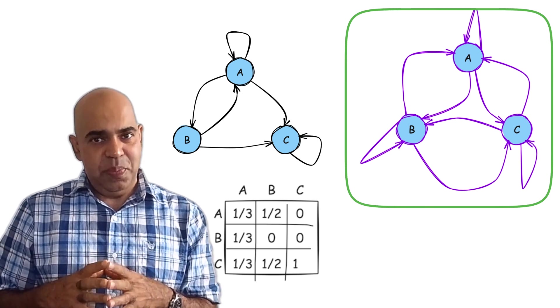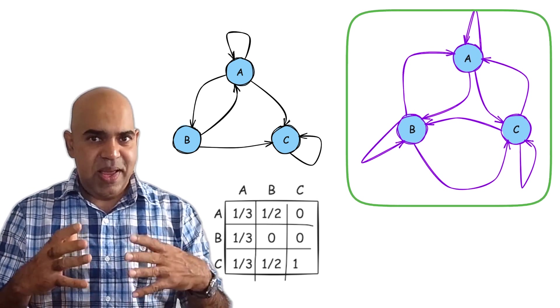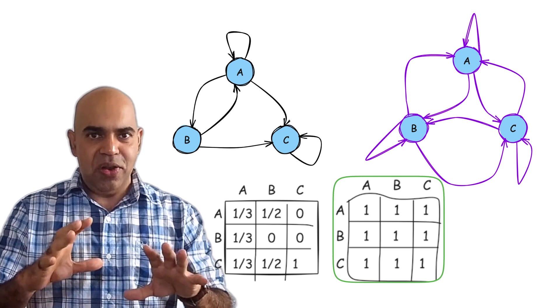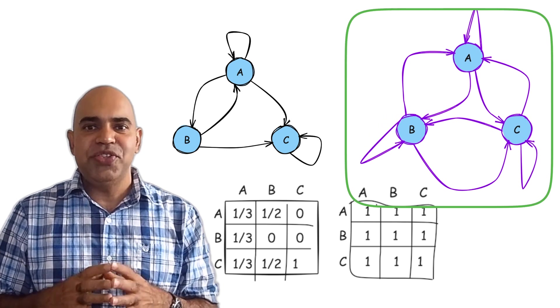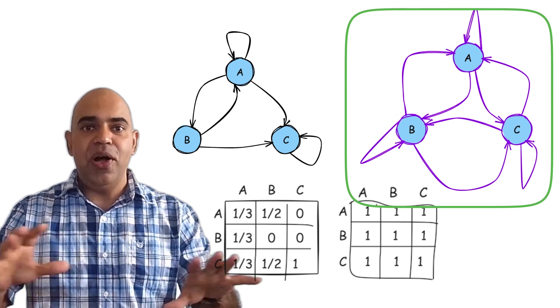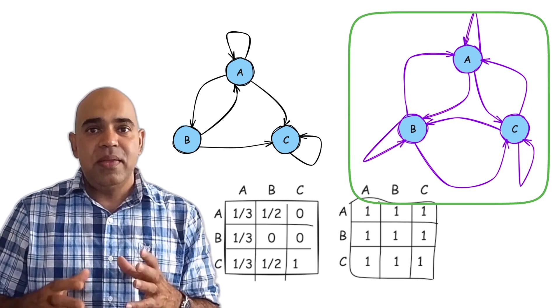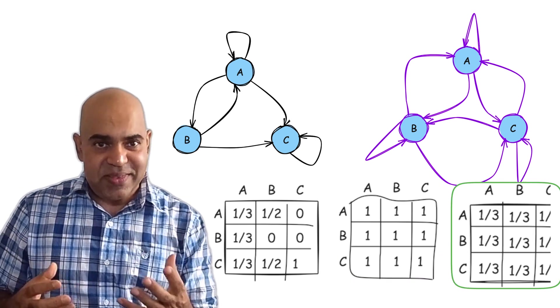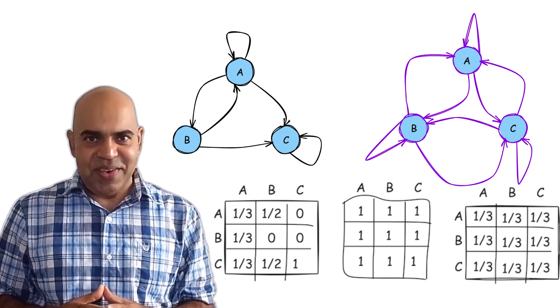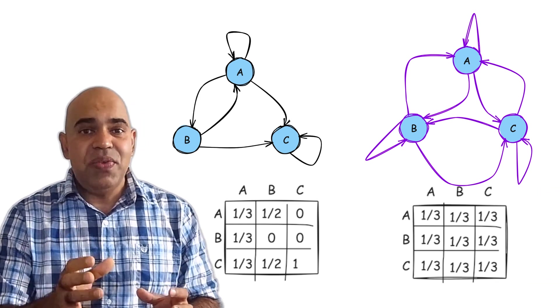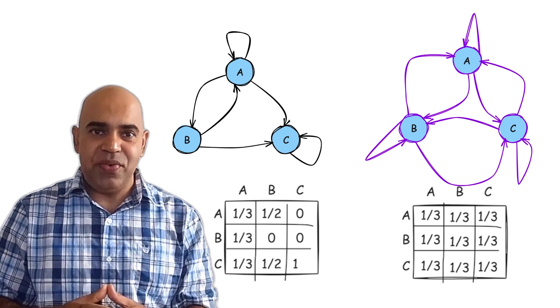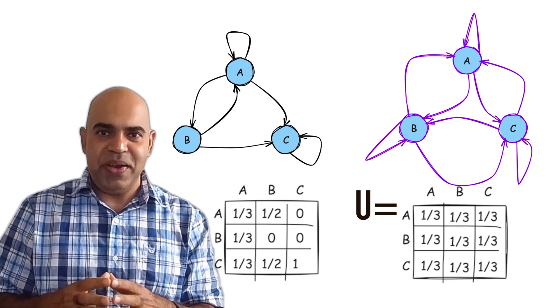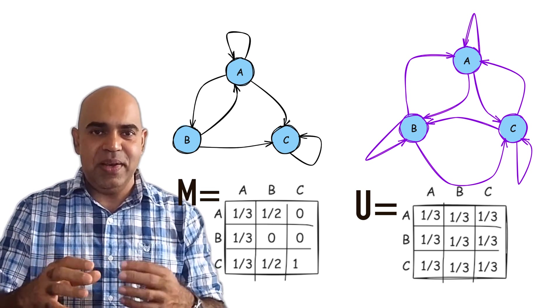Now, this random teleportation network is interesting. Its adjacency matrix is uniform, containing all ones in all cells, because the teleportation network links between all pairs of websites. The uniform adjacency matrix translates to a uniform transition matrix. Pretty interesting, right? Let us denote this uniform teleportation transition matrix by the letter capital U. Our hyperlink transition matrix is denoted by capital letter M.